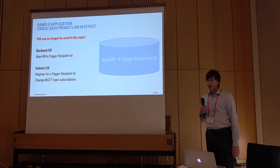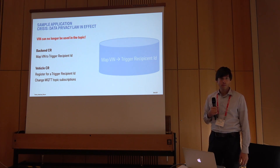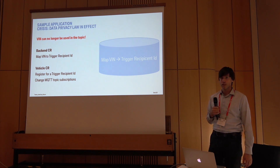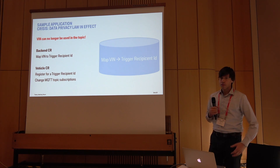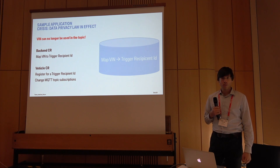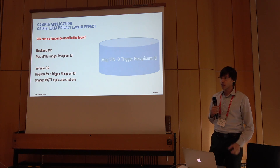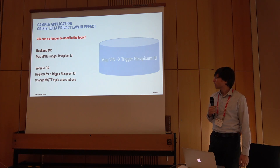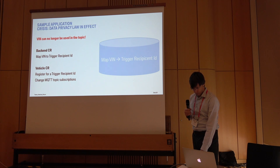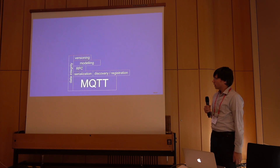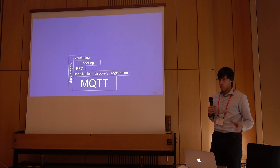New privacy laws come into effect. The topics were all based on the vehicle identification number. Vehicle identification numbers are personal information that must be protected in a special way starting in 2018. The team forgot to consider that in their topic structure. Now they have to redo the whole topic structure and need a database in the backend mapping from the VIN to some sort of special trigger recipient ID, because they can't address vehicles by VIN directly. Again, a very costly change to make. What they reinvented is a mapping from one identifier to another — which we generalize in Joiner as discovery.